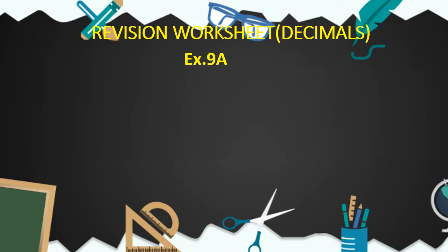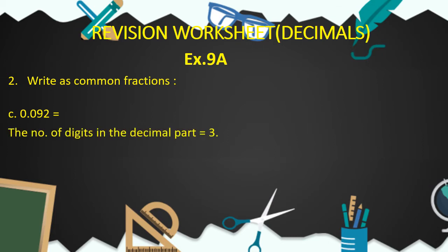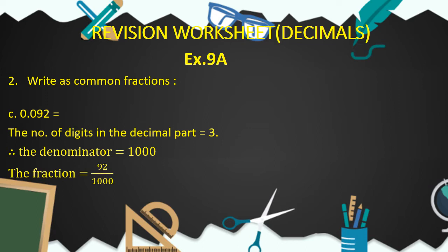Now children, let's come to question number 2: write as common fractions. We will do part C, where the decimal fraction is 0.092. The number of digits in the decimal part is equal to 3, therefore the denominator is equal to 1,000 having 3 zeros. So the common fraction is equal to 92 upon 1,000, and this is our answer.